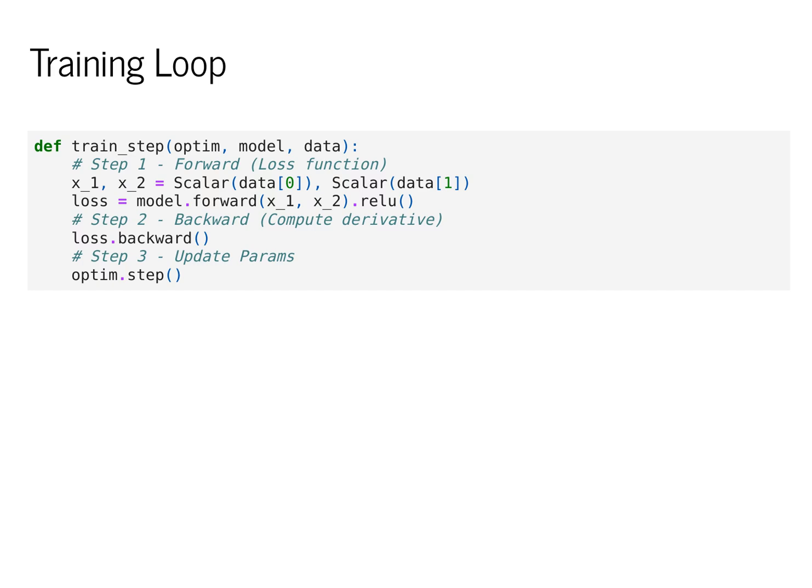However, if you were to do that, you would see that when you call loss.backward, the .derivative member of each of these parameters now contains the derivative we need.